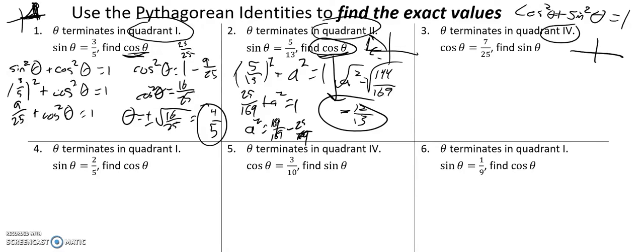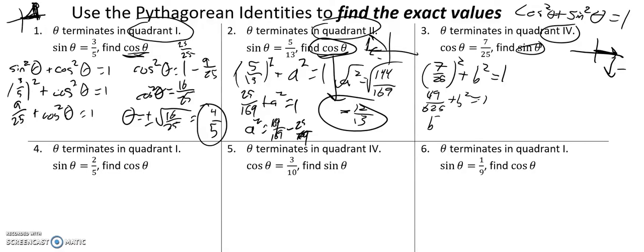In quadrant four, cosine is positive, sine is negative, so I'm going to negate my answer. Cosine is seven-twenty-fifths. That squared plus sine squared — I'll call it b — equals one. Seven-twenty-fifths squared is forty-nine over six-twenty-five. Subtract that from both sides: b squared equals one minus forty-nine over six-twenty-five. One is six-twenty-five over six-twenty-five, so six-twenty-five minus forty-nine is five-seventy-six. Square root of five-seventy-six is twenty-four, square root of six-twenty-five is twenty-five. Since it's in quadrant four, the sine value must be negative.